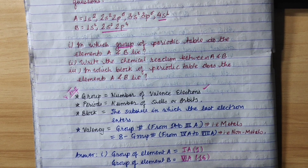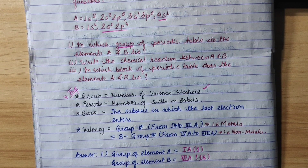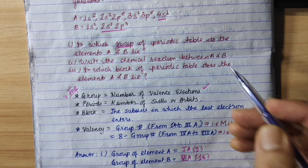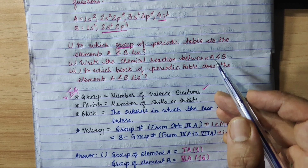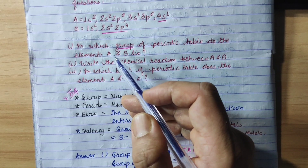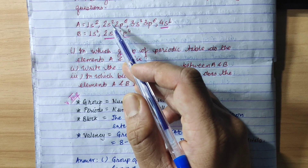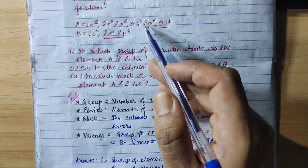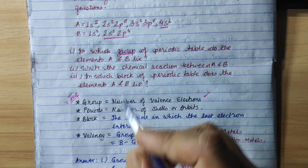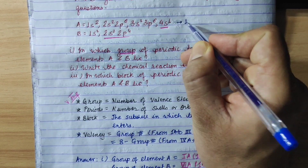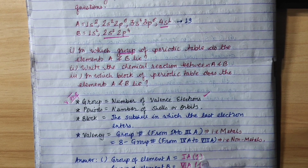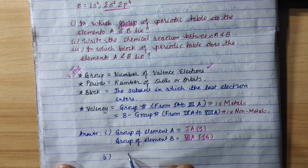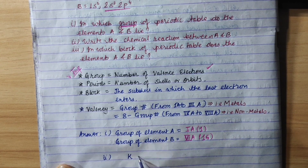Now question number 2: write the chemical reaction between A and B. For element A, counting the electrons: 2 plus 2 is 4, 4 plus 6 is 10, 10 plus 8 is 18, 18 plus 1 is 19. This gives atomic number 19, which is Potassium.